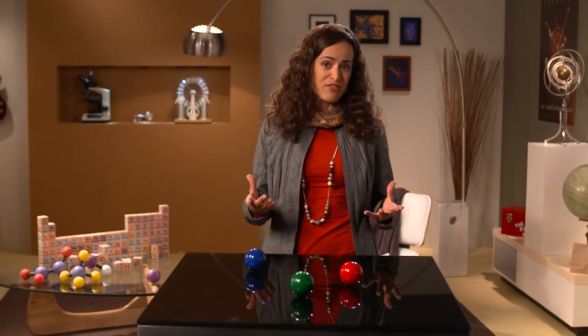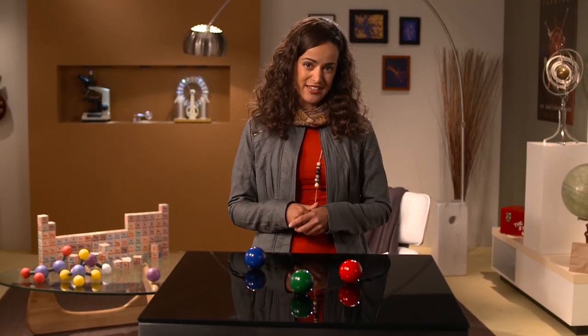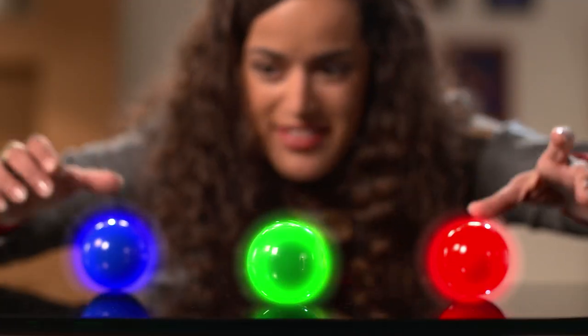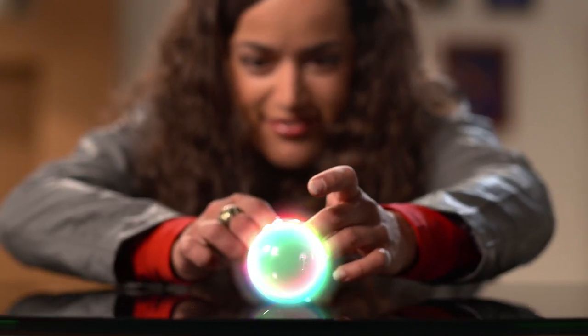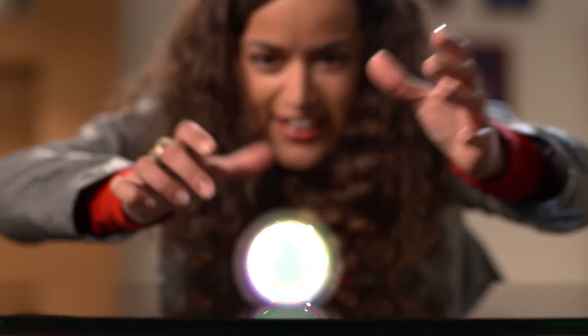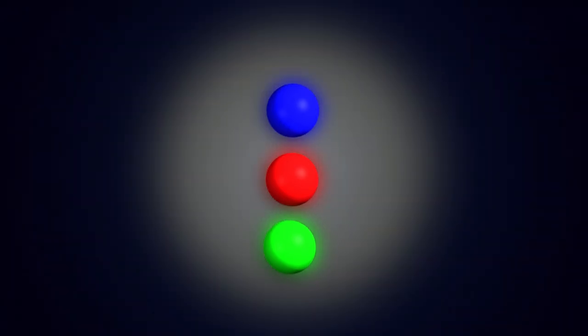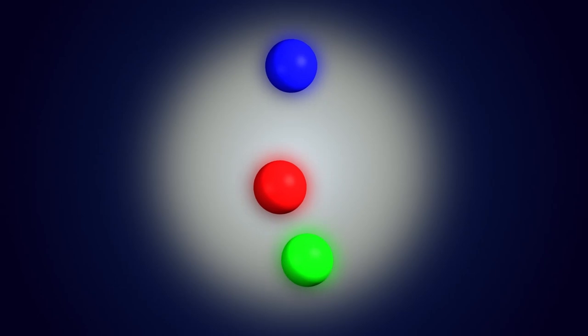La force forte est une force fondamentale comme la force électromagnétique, mais elle agit très différemment. Un quark peut porter une des trois charges identifiées à l'aide des couleurs rouge, vert et bleu. Combinez-les ensemble et vous obtenez une particule incolore. Même si la force électromagnétique s'affaiblit plus on s'éloigne de la charge, la force forte est plus faible près de la particule et devient plus forte plus elle s'en éloigne.